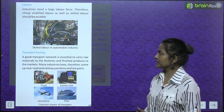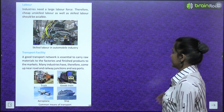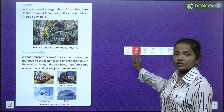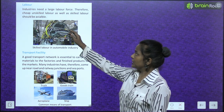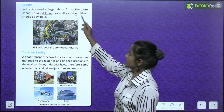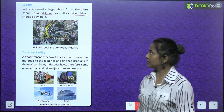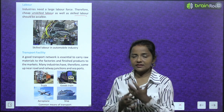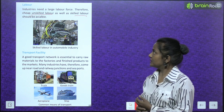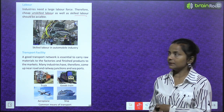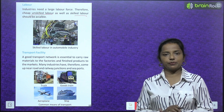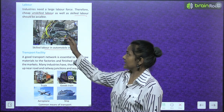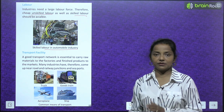Next comes labour. Industries need a large labour force. Therefore, cheap unskilled labour as well as skilled labour should be available. For example, skilled labour is required in an automobile industry.